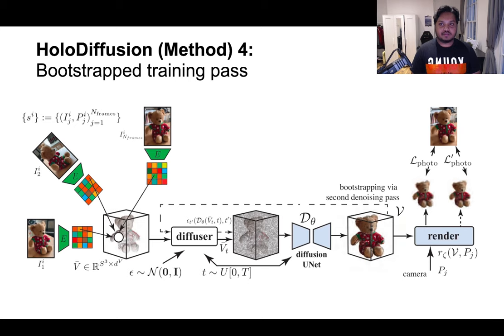We thus minimize the sum of the two photometric losses L and L' as the training objective. Finally, once the network D-theta is trained using our HoloDiffusion technique, it can be used to draw samples in the latent space of the feature voxel grids.